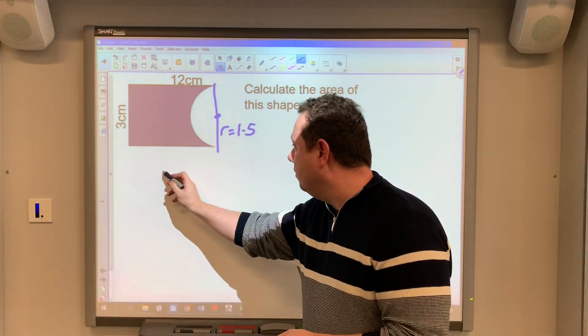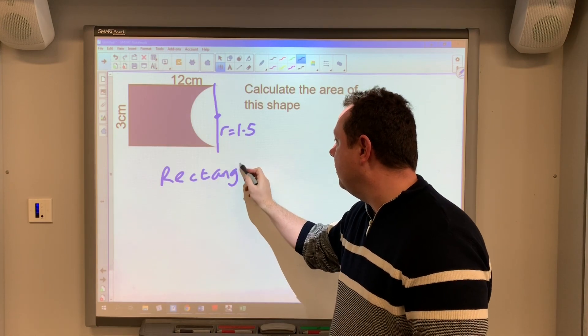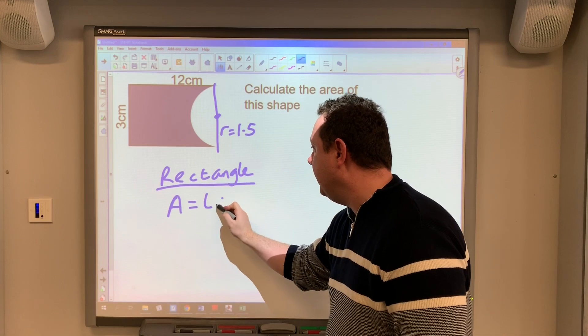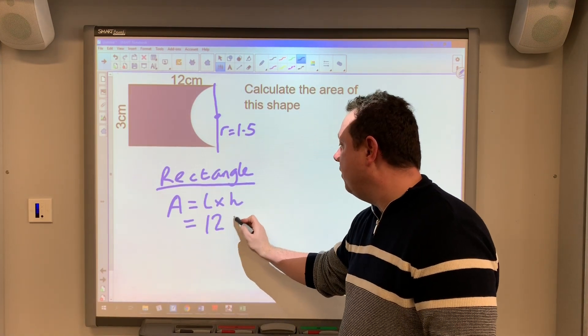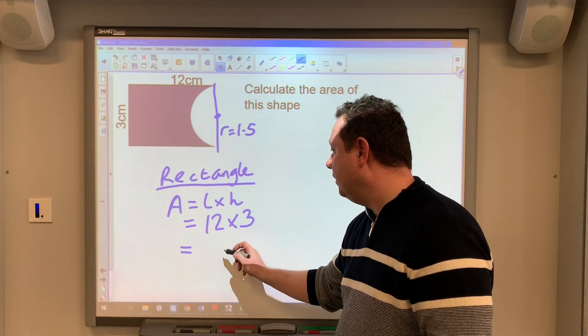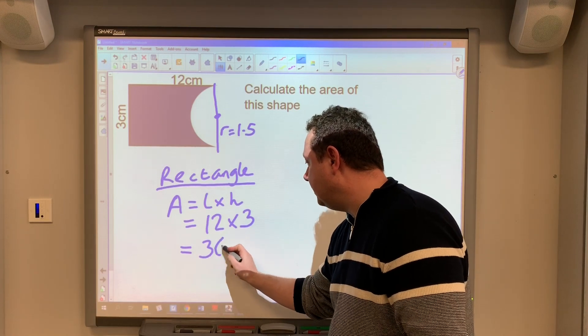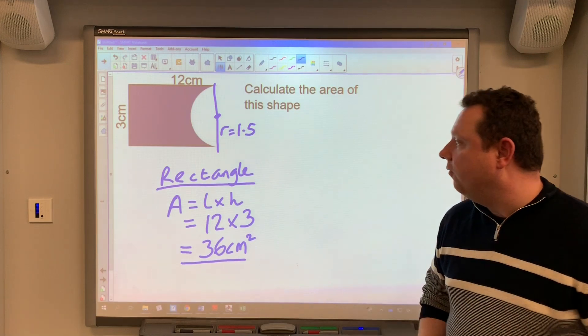So I've got a rectangle. Remember the area of the rectangle is just the length times the height. The length of the shape is 12. The height is 3. 12 times 3 is 36 centimeters squared.